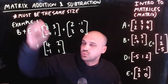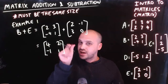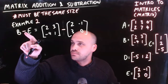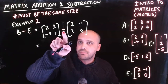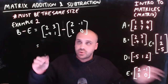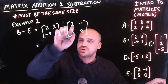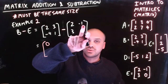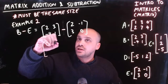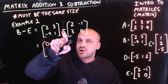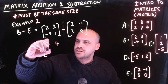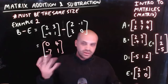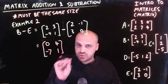Here's a second example: B minus E, same matrices. It works the same way. 2 minus 2 is 0. 3 minus minus 1 — you've got to be careful — is 4. Negative 4 minus 3 is negative 7. And 1 minus 0 is 1. So addition and subtraction could not be simpler.